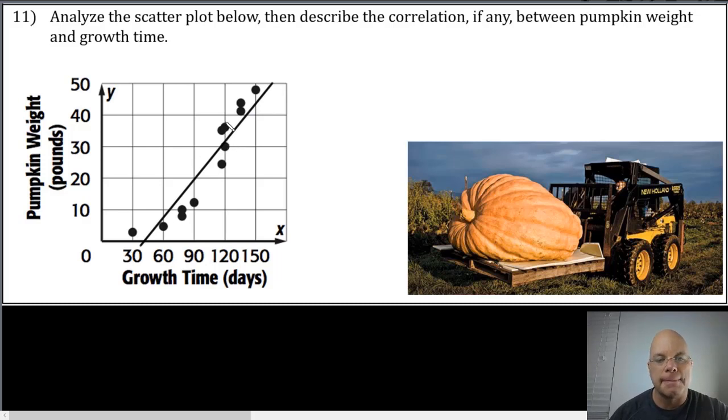This looks like a positive correlation, because as the independent variable increases, the dependent variable also increases. We would draw a line of best fit through the data, where if possible we have some points going through the line, but more importantly, we have just as many points below the line as above the line.